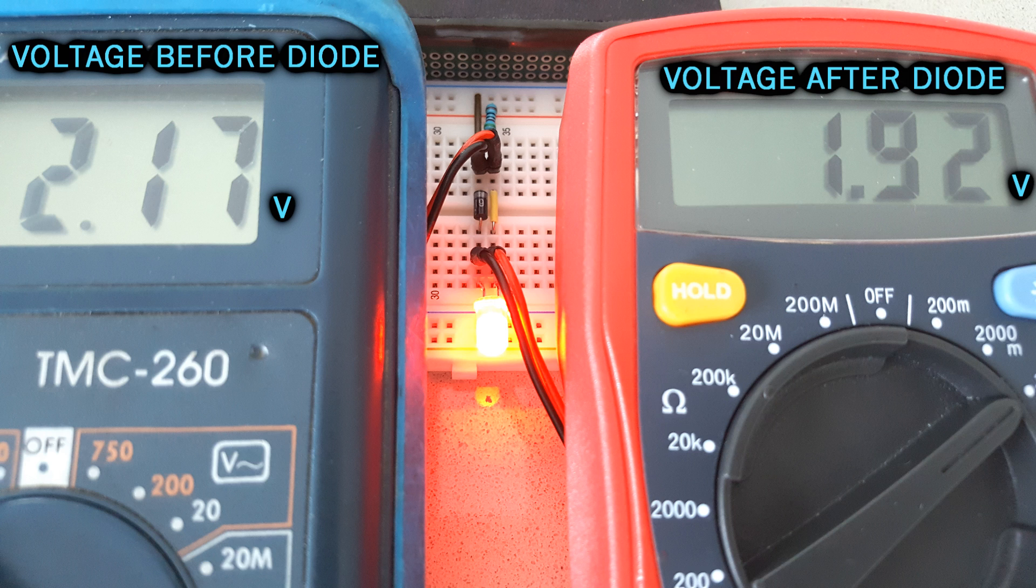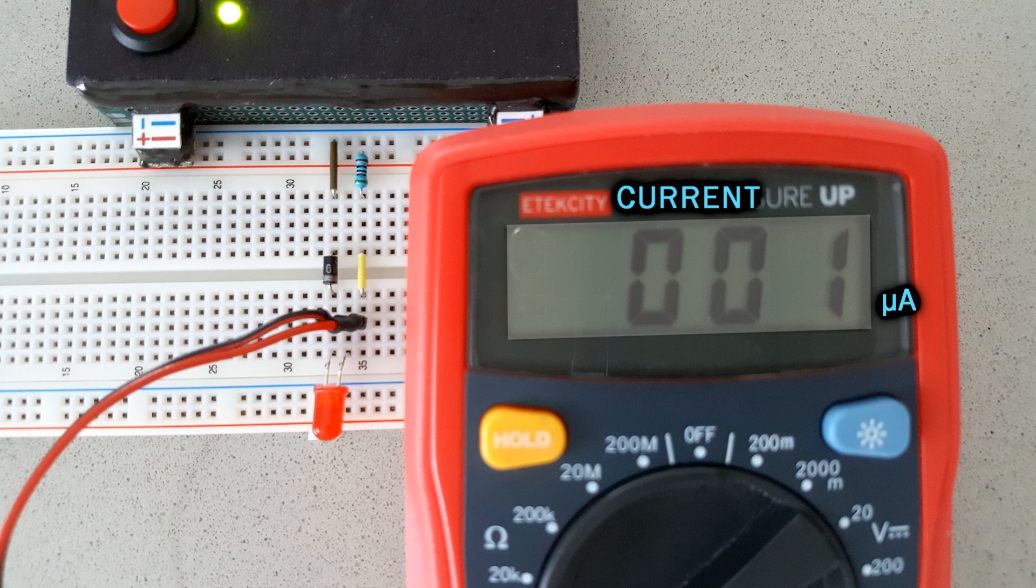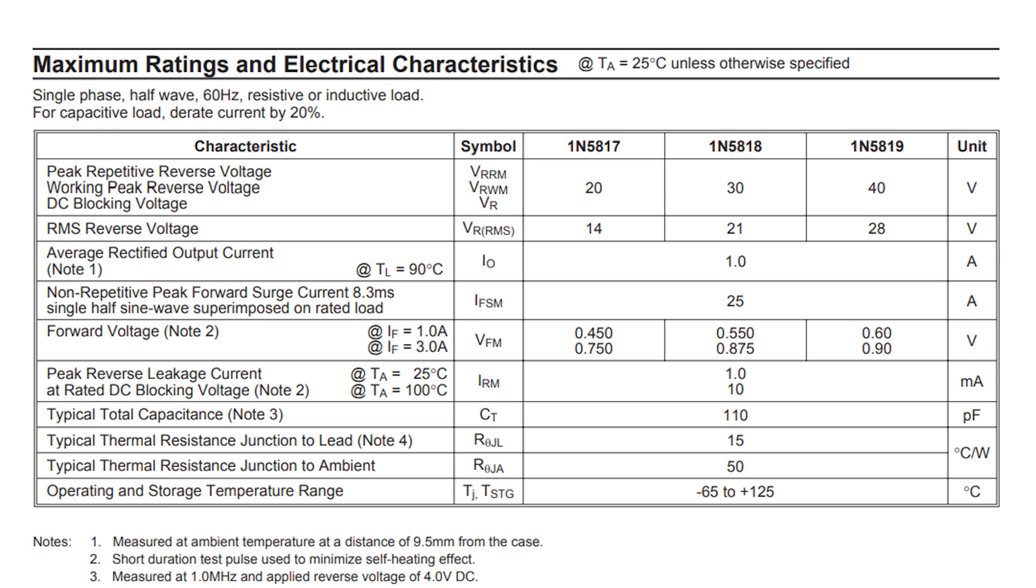They are not perfect though. There is always some voltage drop when letting current pass and some current escapes when blocking, but for most applications, this doesn't matter that much. The most relevant unit when we deal with diodes is the maximum current that it can handle. But there are many other characteristics that are relevant for specific applications.